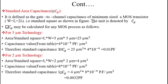Now we discuss the standard area capacitance, denoted as □CG (square CG). The standard area capacitance is defined as the gate-to-channel capacitance of a minimum-sized MOS transistor. We know that the minimum size of a MOS transistor has width and length both equal to 2λ, forming a square area. The capacitance offered by that square area is called the standard area capacitance, □CG.